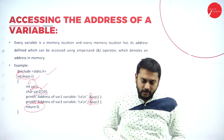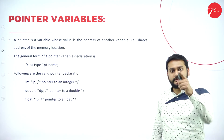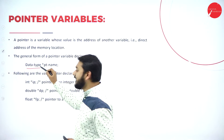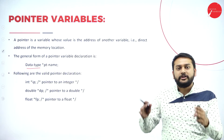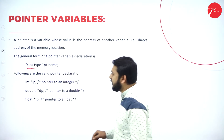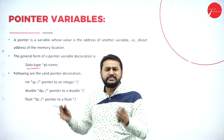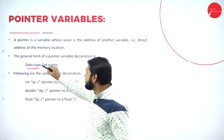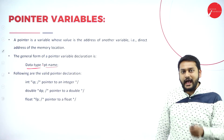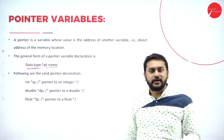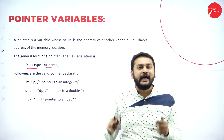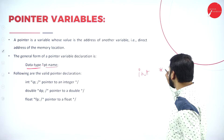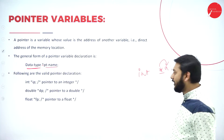Now, how do I declare a pointer variable? First I write the data type — just like how we declare a normal variable — then followed by an asterisk and the pointer name. The asterisk is a special character that makes a variable a pointer variable. For example, if I write int *a, the star makes this variable a pointer variable of type int.